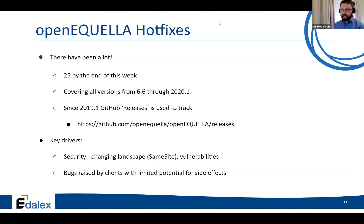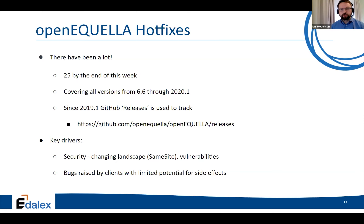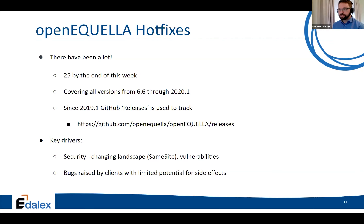We also started changing our versioning number to use a minor and patch version at the end so it could be more readily tracked. We publish every hot fix and release on 2019-plus on GitHub releases. The Open Aquila server versions 2019 onwards actually queries that GitHub releases page when you're on your system health check page checking the version — that's how it tells whether you're up to date. You can register on GitHub for release notifications and get an email if you have a GitHub account.